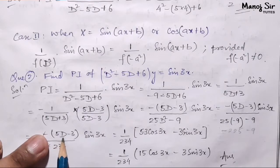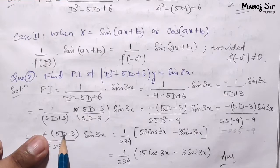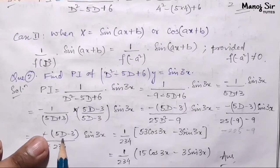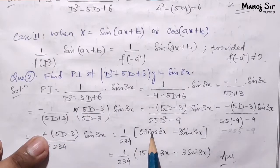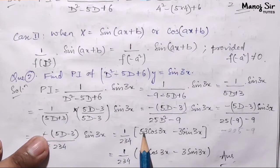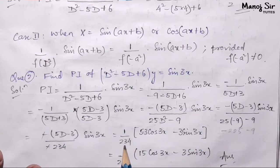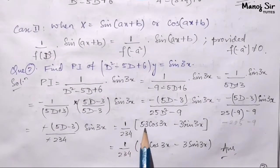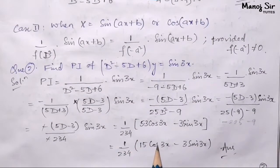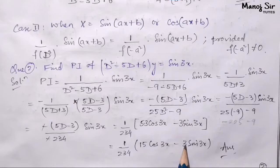Opening the bracket: D is the operator, which means differentiation. So 5 times the differentiation of sine 3x becomes 5 times cos 3x into 3, and minus 3 into sine 3x remains minus 3 sine 3x. Taking 1 upon 234 as common, multiplying gives 15 cos 3x minus 3 sine 3x.